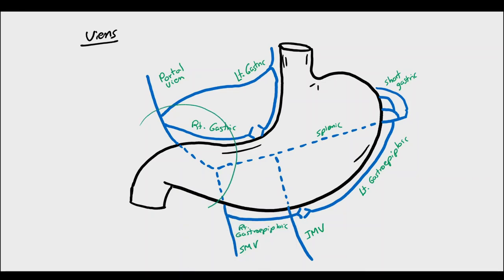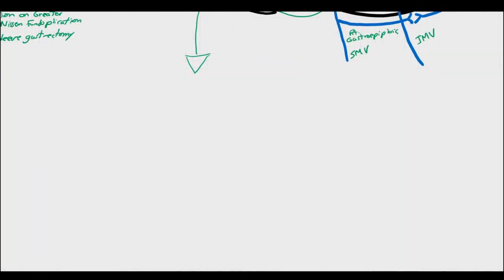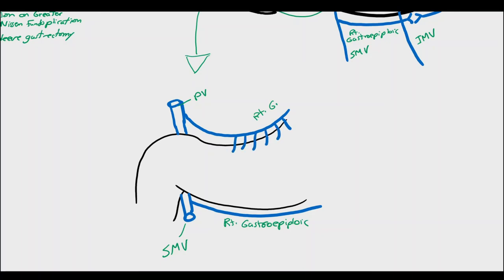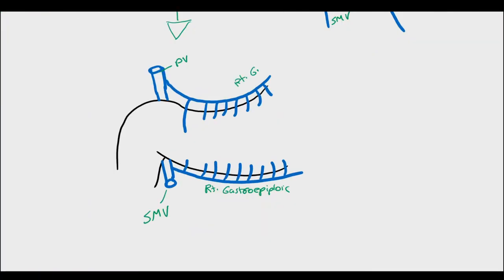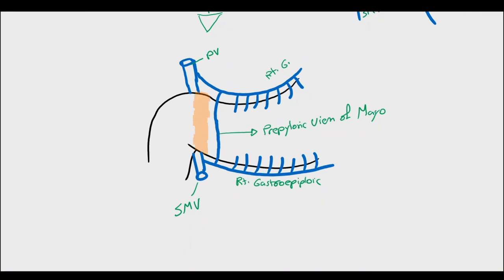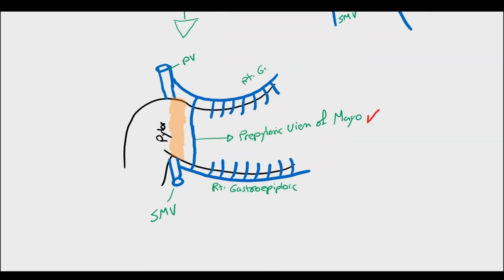Here I would like to add an important side note on the venous drainage of the distal part of the stomach. Here is the antrum and the first part of the duodenum, and between them is the pylorus. The right gastric vein drains the lesser curvature of the stomach directly into the portal vein, and the right gastroepiploic vein drains directly into the superior mesenteric vein. Sometimes we can notice a prominent communicating vein between the right gastric vein and the right gastroepiploic vein. This vein is called the pre-pyloric vein of Mayo. Although the pylorus can be more felt than seen — as a thickening of the pyloric muscle followed by the thin wall of the duodenum — when present, the pre-pyloric vein of Mayo is a good landmark to determine the location of the pylorus.